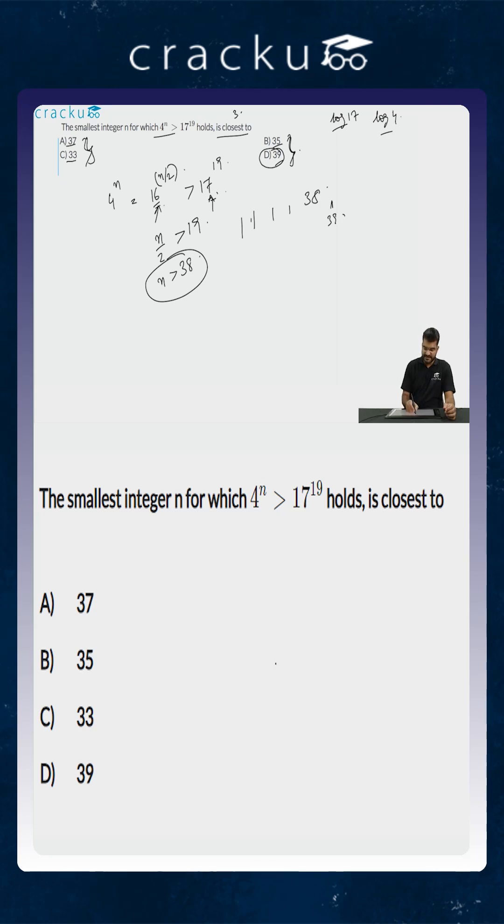So the answer in this case is 39. We know for sure that n is greater than 38, and so the only option which is closest to it is 39.